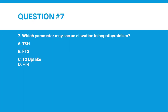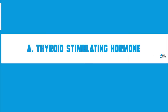Number 7. Which parameter may see an elevation in hypothyroidism? A. TSH, B. FT3, C. T3 uptake, or D. FT4. The correct answer for number 7 is letter A — Thyroid Stimulating Hormone, or TSH.